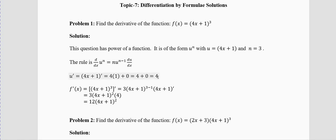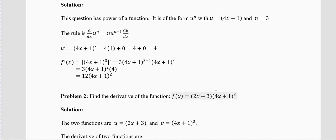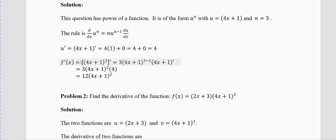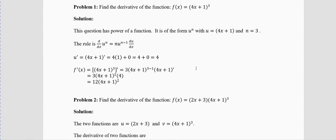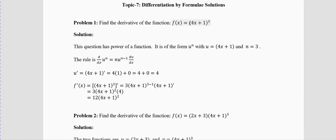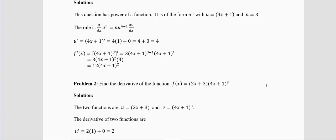The derivative of u is 4 + 0 = 4. Now write the rule: f′(x) = [(4x+1)³]′. Bring the power down: 3 · (4x+1)^(3−1) · derivative of the inside. The derivative of (4x+1) is 4, so you get 4 · 3 = 12, and the power becomes 2. So f′(x) = 12(4x+1)². This is just like the derivative of x³ being 3x². Remember to keep the bracket.